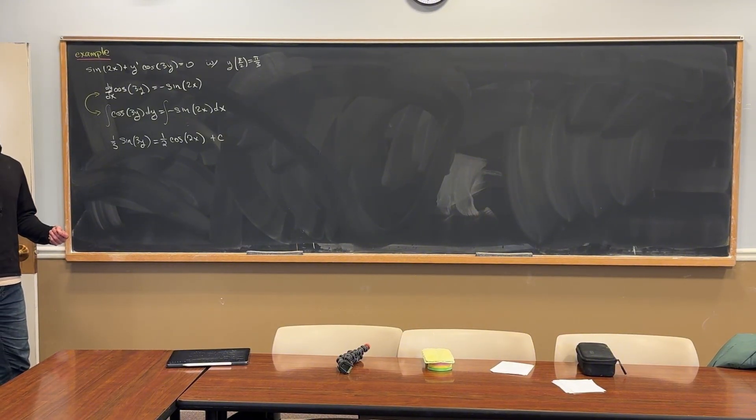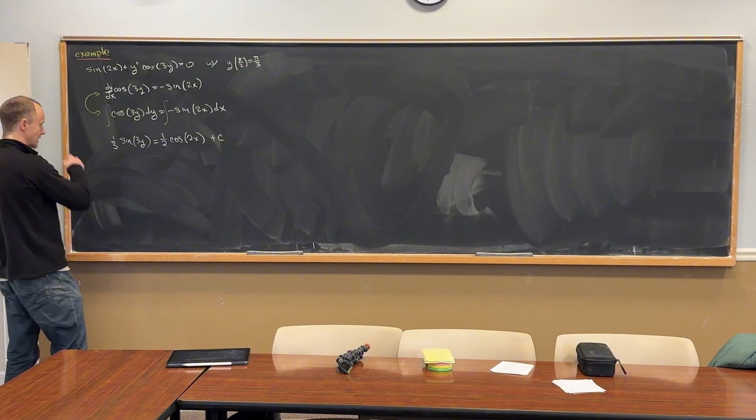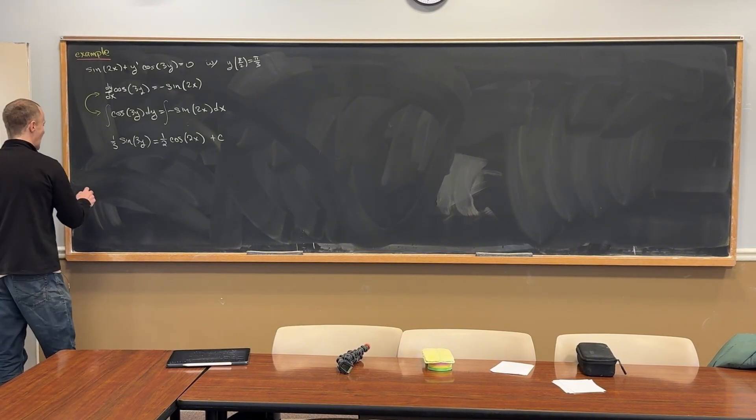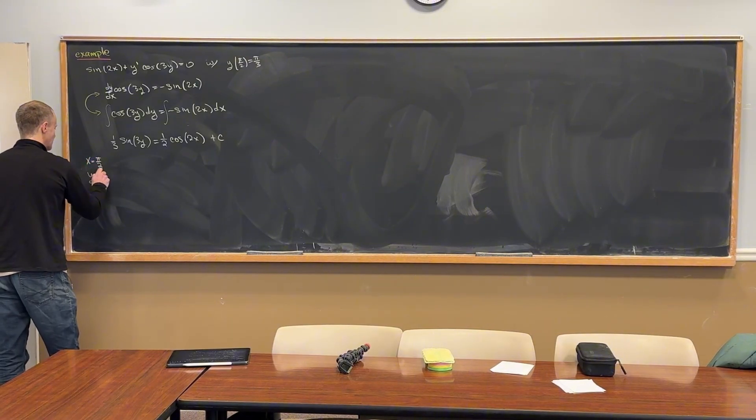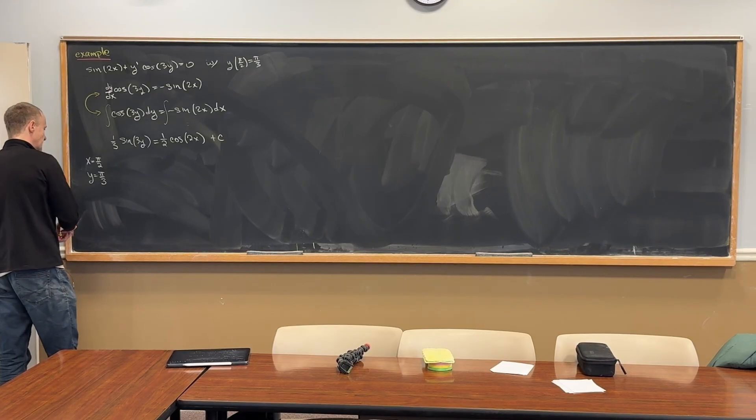Okay, so now let's maybe evaluate this at x equals pi over 2 and y equals pi over 3. That's how we should read that initial condition up there.